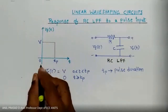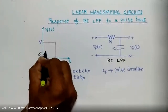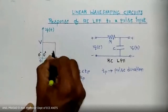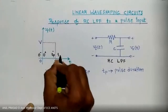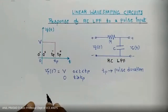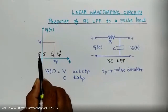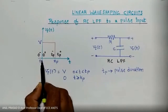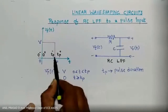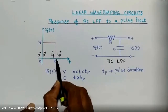Before we go further, let me introduce two important terms — you might have studied these in transient analysis. So: 0 minus is just before 0, and 0 plus is just after 0. Similarly, tp minus means just before tp, and tp plus means just after tp.